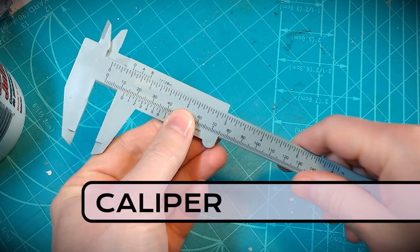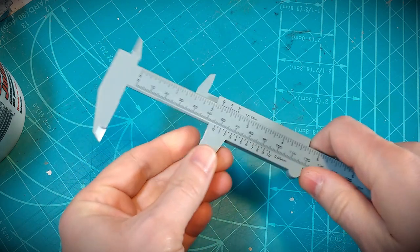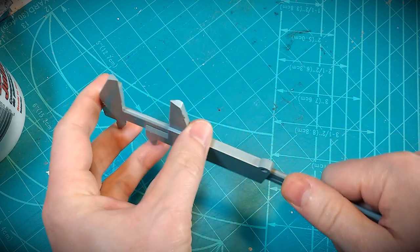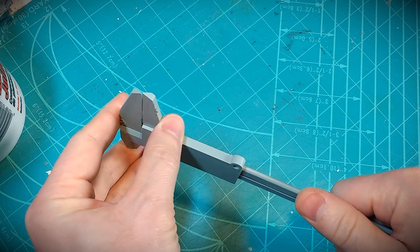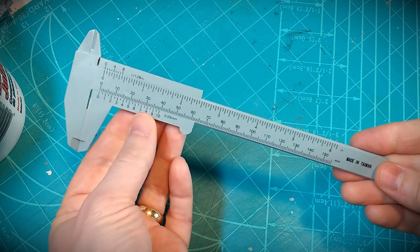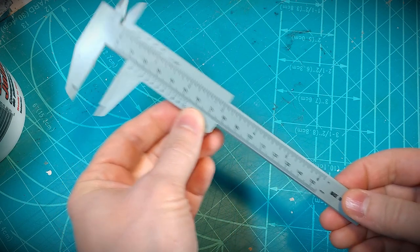A caliper like this, again, I've used to gauge material thickness, even space. One side you can measure in on your thickness, and the other side, the smaller part, you can use it to gauge the space in an area as well.